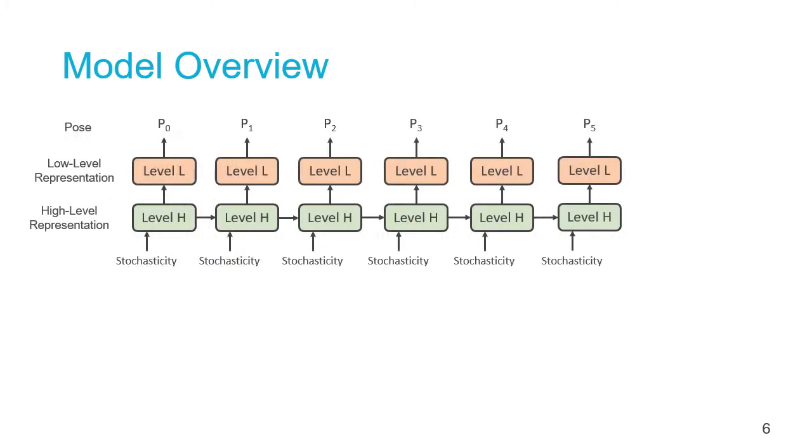Our architecture operates with a two-level hierarchy. Our high-level representation layer, which is specified here as level H, operates as a probabilistic recurrent cell with multiple levels of abstraction across the spatial dimension.